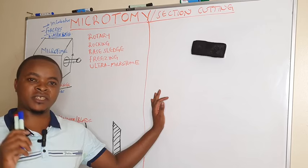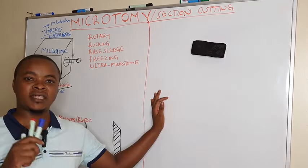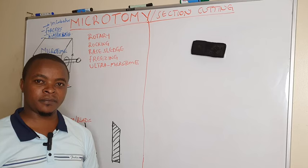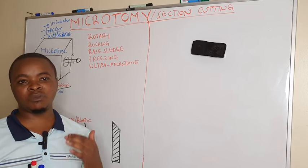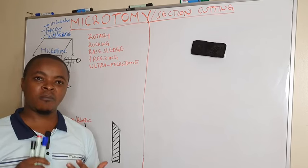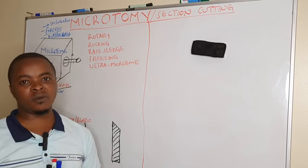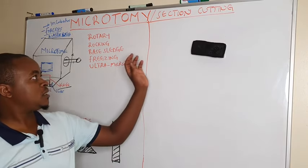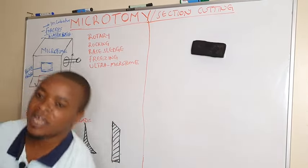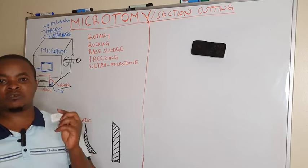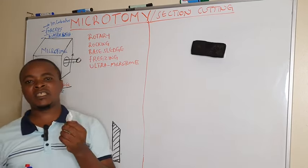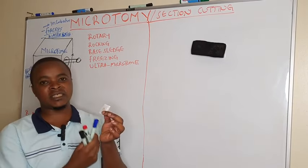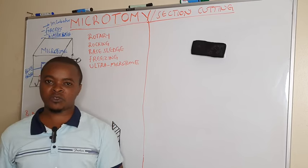The major significance of microtomy is to ensure cutting of thin sections that can enable microscopy. We are going to see cutting sections between 2 to 4 micrometers, so that we can enable microscopy. This step follows after embedding — after embedding the tissue with paraffin wax, we ensure cutting of thin sections from the embedded tissue for microscopy.